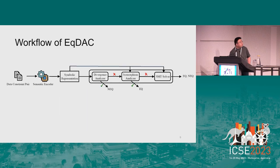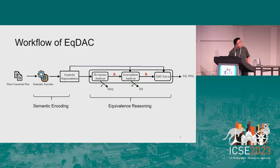Based on this insight, we designed our decision procedure EQ-Data. First, we conduct semantic encoding to transform data constraints into logical formulas as symbolic representations. Then we leverage two lightweight analyses and SMT solving to conduct equivalence reasoning. These two lightweight analyses are the core technical contributions of our work.